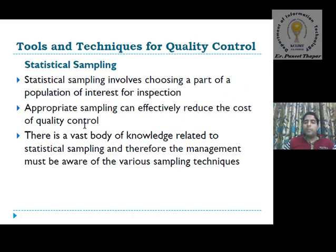Next is statistical sampling. Sampling involves choosing a part of the population of interest for inspection. By inspecting the product we can check the population of interest and control quality. By appropriate sampling, a factory can reduce the cost of quality control. If some products are not very popular in the population of interest, we can control productivity and the number of units delivered to users.